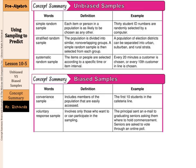Now, biased samples. Reasons that a sample might be biased include a convenience sample — it includes members of the population that are easily accessed, such as the first 10 students in the cafeteria line. If you ask a class whether they like the cafeteria food and you only ask the first 10 people in line, that's not random. That's not a good sample. It's just easy, which is why it's called a convenience sample.